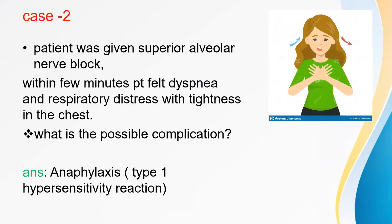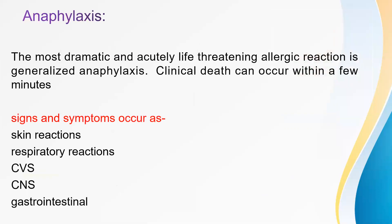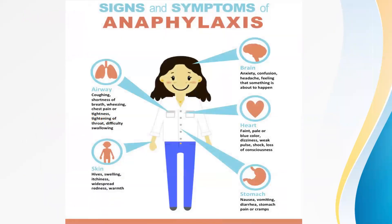Case 2. A patient was given a superior alveolar nerve block. Within a few minutes, the patient felt dyspnea and respiratory distress with tightness in the chest. The possible complication is anaphylaxis, that is type 1 hypersensitivity reaction. Anaphylaxis is the most dramatic and acutely life-threatening allergic reaction. Clinical death can occur within a few minutes.